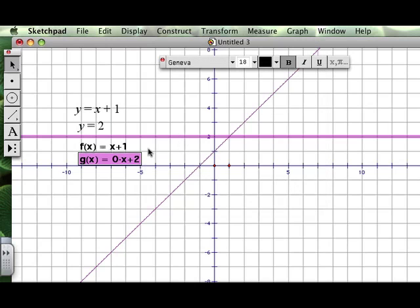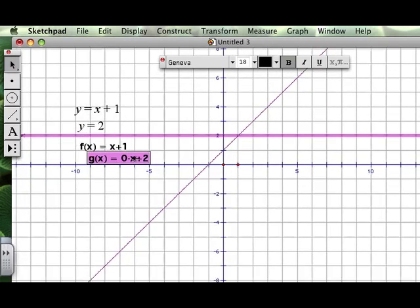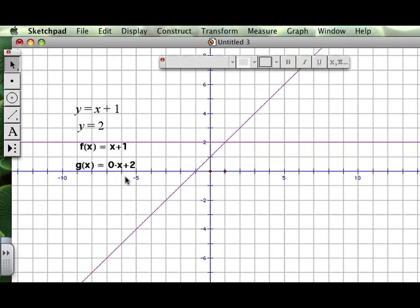The reason I did that is you can see that the slope of the line here is 0. So that means there is no slope, because in y equals mx plus b form, this is 0 times x. So the slope of the line is 0. It's a horizontal line. The y-intercept is 2, so we have a horizontal line that goes through y equals 2.